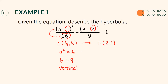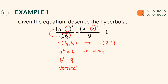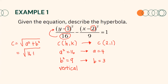Furthermore, since a² = 16, then a = 4. This is the distance of the vertices from the center. Since b² = 9, then b = 3, which is the distance of the co-vertices from the center. For the foci, we solve for c using the formula c = √(a² + b²). Using a² = 16 and b² = 9, c = √(16 + 9) = √25 = 5. Therefore, the foci are 5 units away from the center.